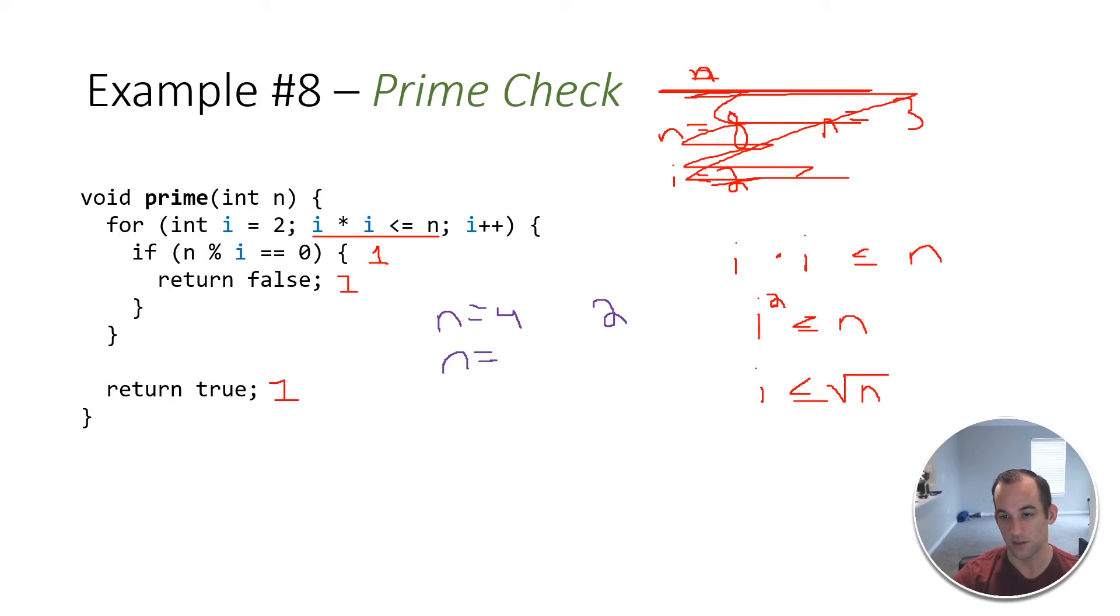If n equals 9, then we have 3. N equals 16, 4. N equals 25, square root is 5, and so forth. So this means that the amount of times that we're going to go through this is proportional to the square root of the size of the input, okay?